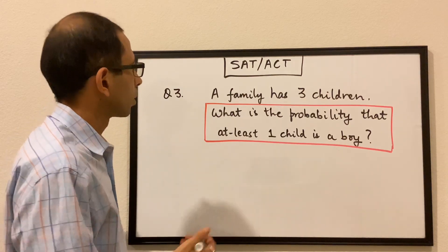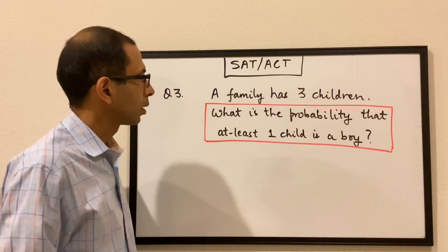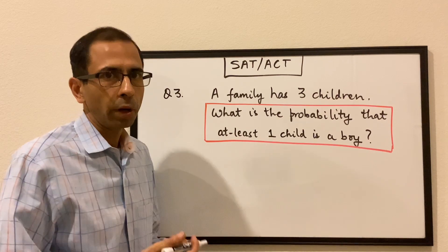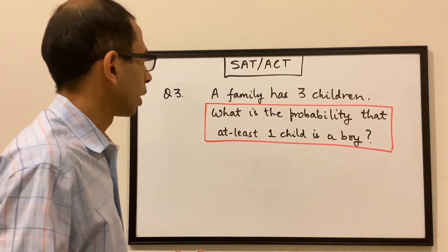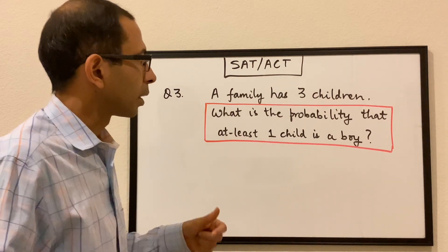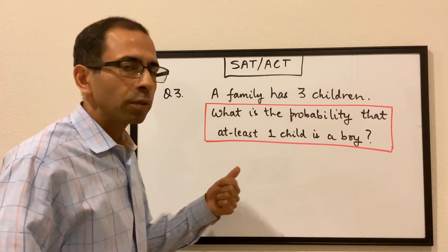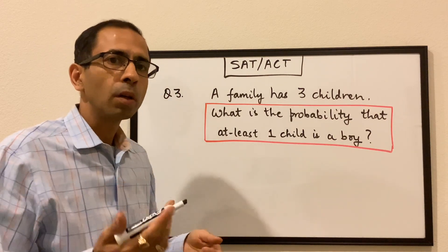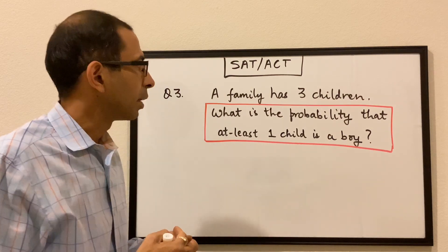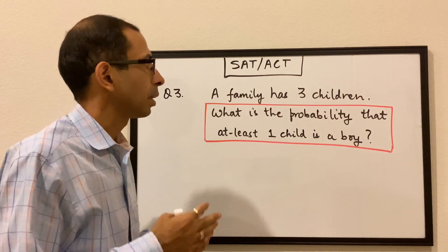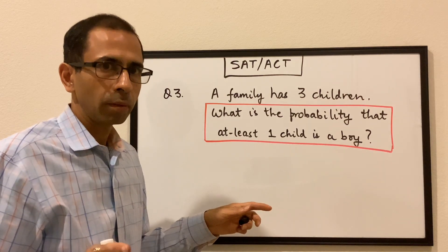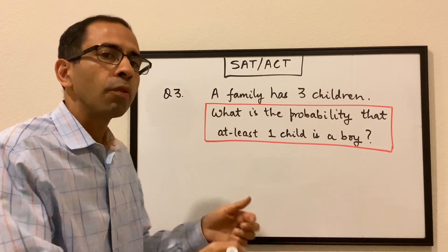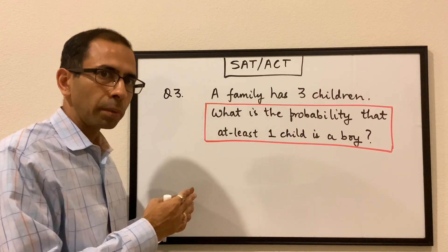Next question: a family has 3 children. What is the probability that at least one child is a boy? The easiest approach is to find the probability of the opposite scenario — that none of them is a boy — and subtract that probability from the total.